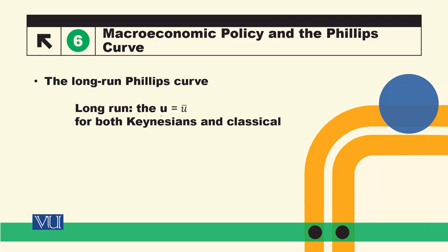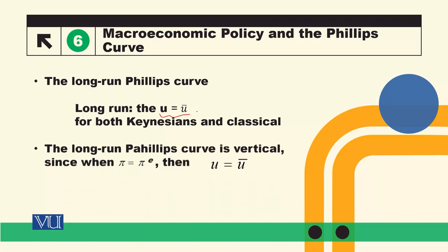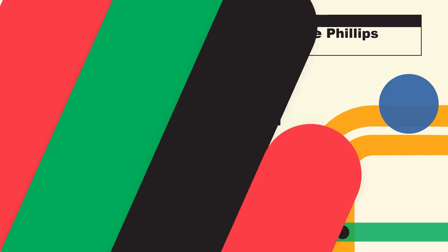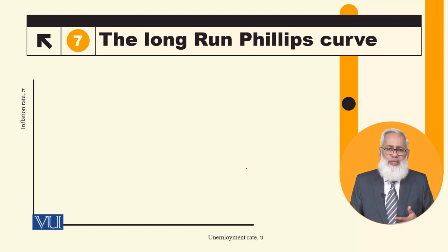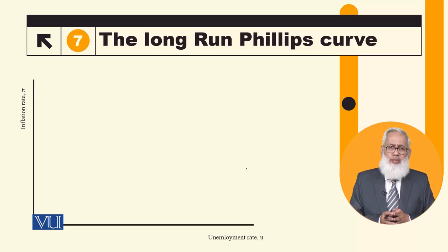In the long run, actual unemployment will always equal the natural rate of unemployment. So the long-run Phillips curve is vertical. The natural rate of unemployment will prevail, and expected inflation will be equal to actual inflation. In the short run, we have a negatively sloped Phillips curve — that is the short-run Phillips curve — given a constant natural rate of unemployment and expected inflation.